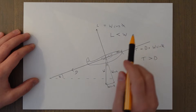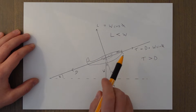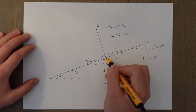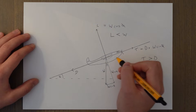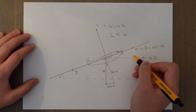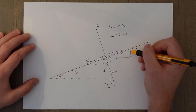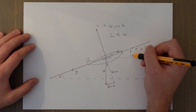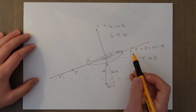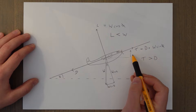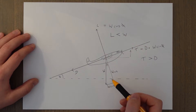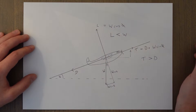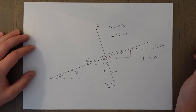Another way to think of it is that thrust could be broken up into two components — a horizontal and a vertical — and some of the vertical component of thrust is helping with the weight. That might be an easier way to think of it.